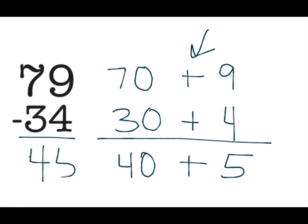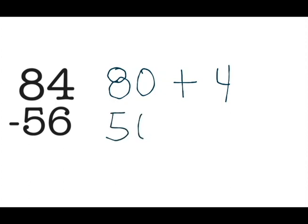Let's take a look at a problem where I'm going to need to make a trade. So let's look at 84 minus 56. 84 is the same as 80 plus 4, and 56 can be represented as 50 plus 6.